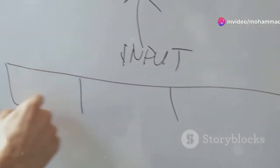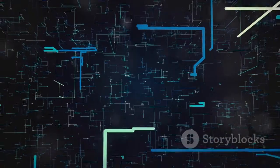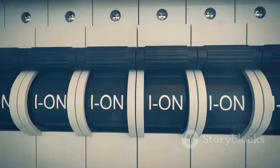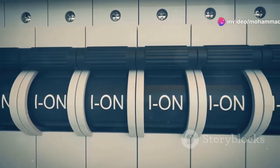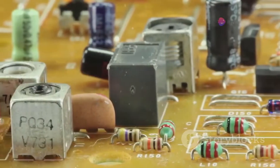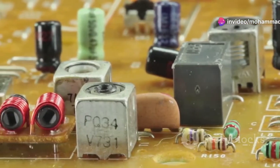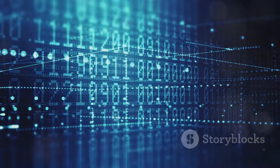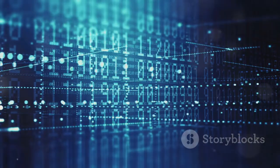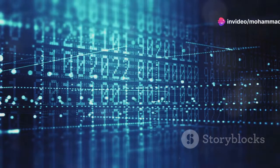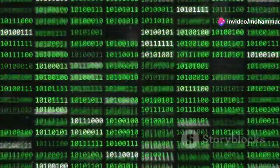A logic gate is like a tiny calculator. It takes one or more inputs and produces a single output based on a set of rules. These rules are based on Boolean logic, a system of mathematical logic developed by George Boole in the 19th century. Each logic gate has a specific symbol and a corresponding Boolean expression that describes its behavior. Logic gates are typically built using transistors, but they can also be created using other electronic components like relays or diodes. The inputs and outputs of a logic gate are represented by electrical signals, with a high voltage representing a logical one and a low voltage representing a logical zero. These ones and zeros form the binary language that computers use to process information.